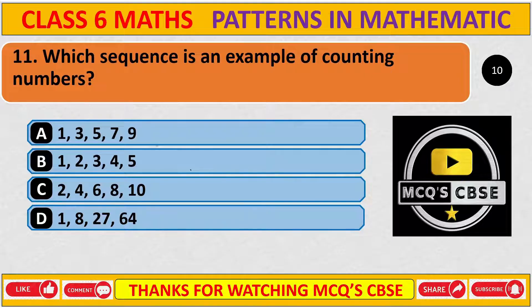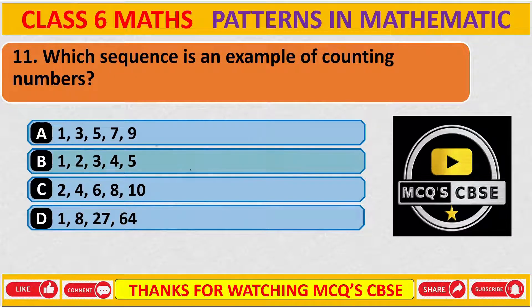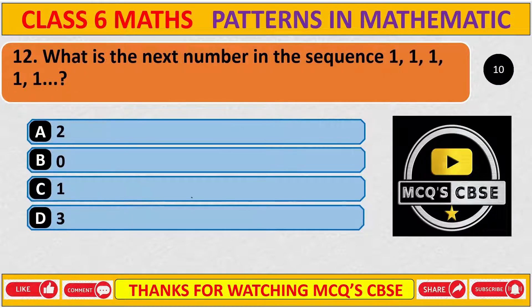Which sequence is an example of counting numbers? The correct answer is B: 1, 2, 3, 4, 5. These are all examples of counting numbers.